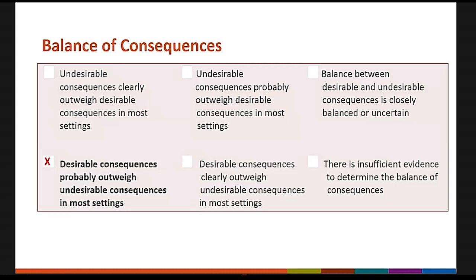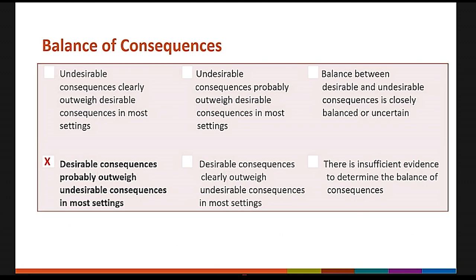The workgroup feels there is sufficient information to move forward with the recommendation. The draft recommendation: In persons for whom rabies vaccine PrEP is indicated, ACIP recommends a two-dose PrEP series IM 0-7 days involving HDCV or PCECV rather than a three-dose PrEP series IM 0-7-21-28 days. The workgroup's preference is for the intervention.